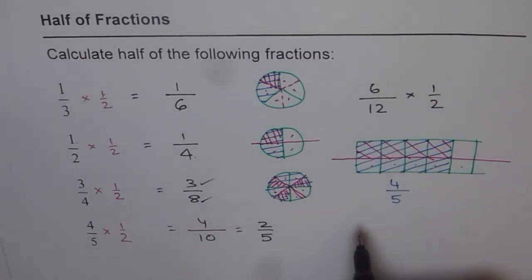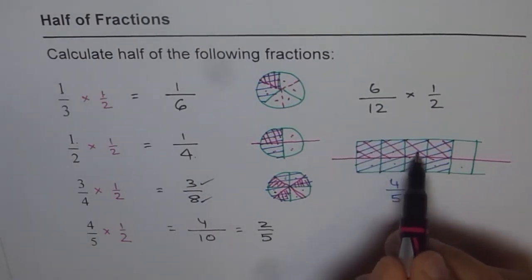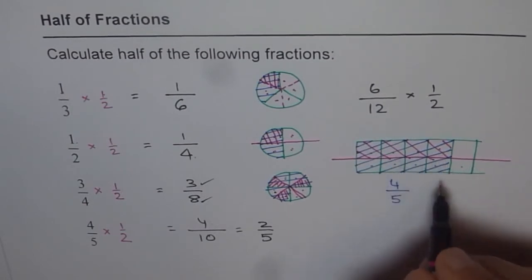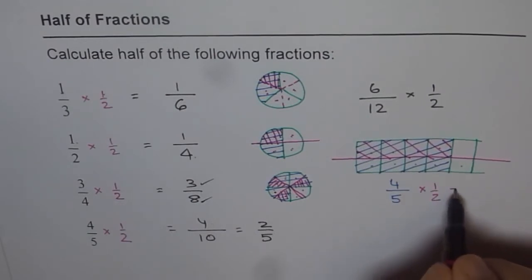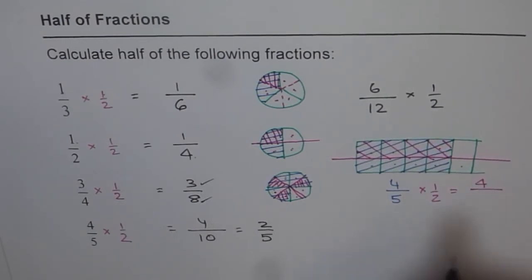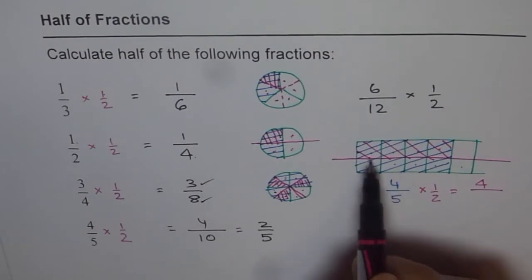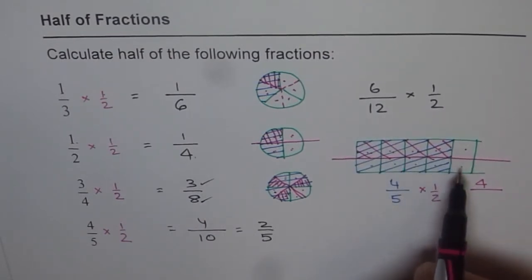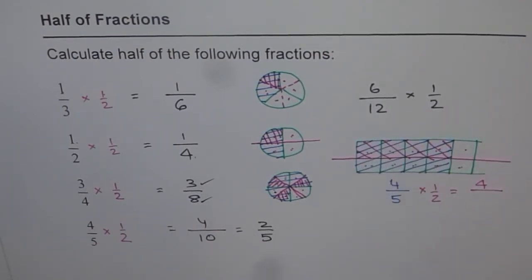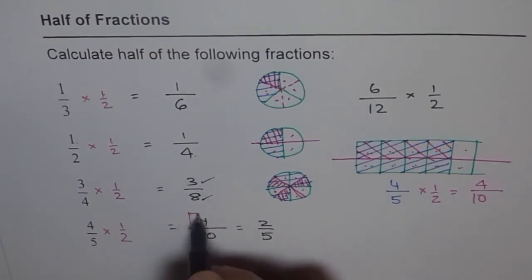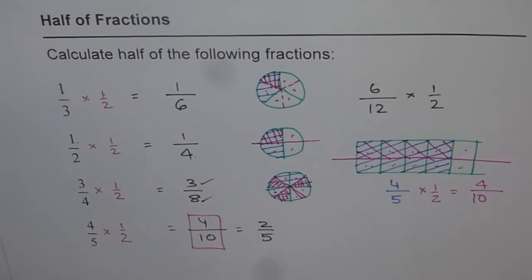So how much did I shade? We shaded 4 parts on top. But out of how many? Counting all the half-parts: 1, 2, 3, 4, 5, 6, 7, 8, 9, 10. So we get 4 out of 10.